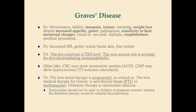For diagnosis, the best initial test when hyperthyroidism is suspected is TSH, to document whether it is primary or secondary. If Graves' disease is suspected, the most accurate test is a serology for thyroid-stimulating immunoglobulin (TSI). A positive TSI is diagnostic of Graves' disease. Additional labs may include a CBC showing normocytic anemia (from anemia of chronic disease) and a metabolic profile showing hypercalcemia due to T3 activating osteoclasts.